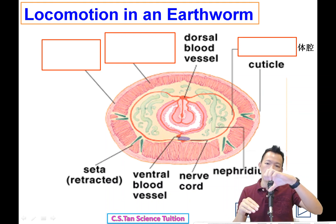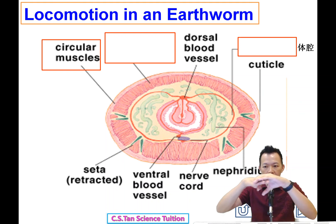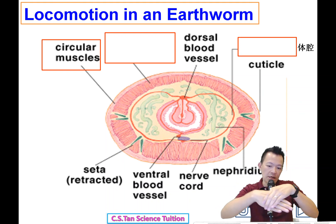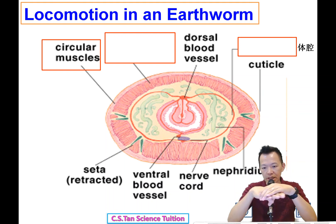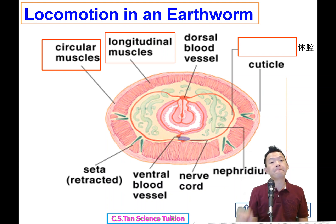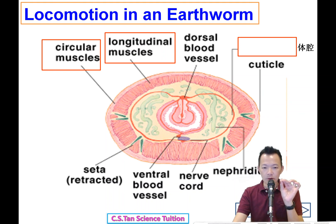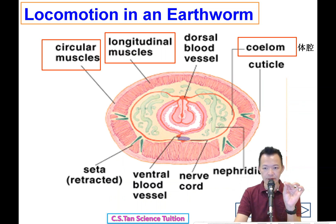The earthworm has a layer of muscle called the circular muscle on the outside. Under the circular muscle, there is another layer of muscle called the longitudinal muscle. Under these two layers of muscle there is a space, but the space is not empty — it is filled with a lot of fluid.